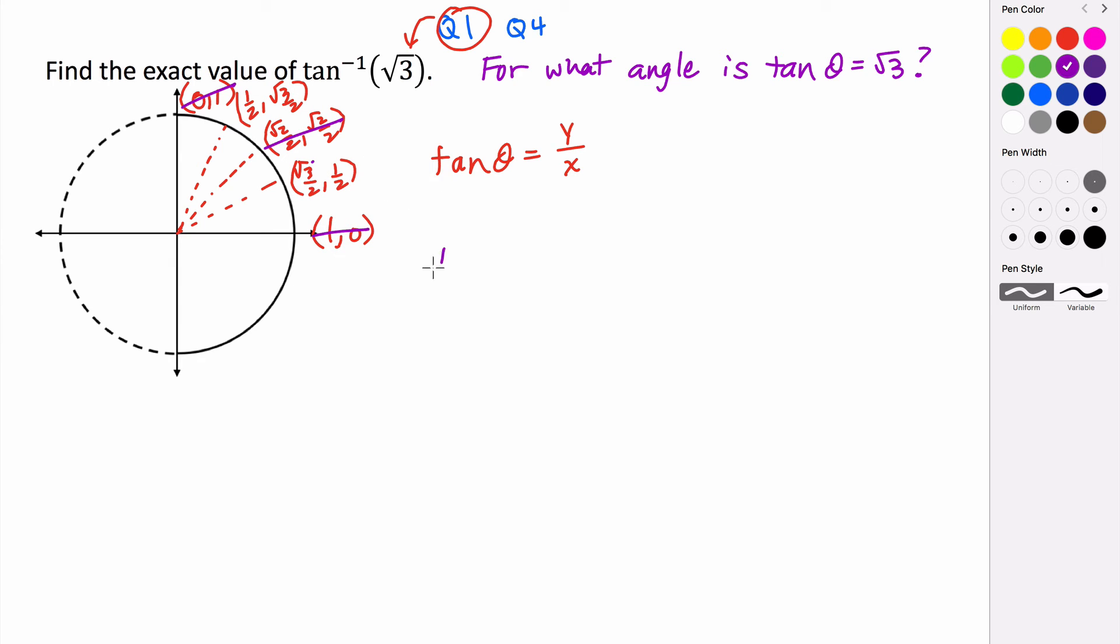If we did π/6, 1/2 divided by √3/2 is going to give us 1/2 times the reciprocal of the denominator, 2/√3. Those cancel. We end up with 1/√3, which is not going to be √3.